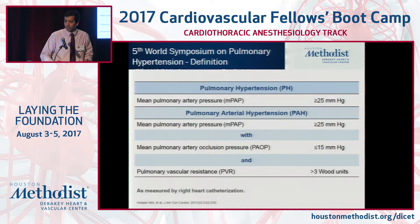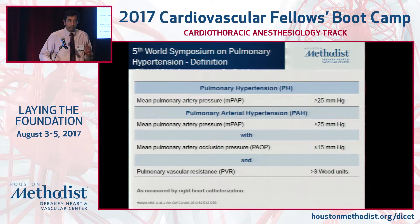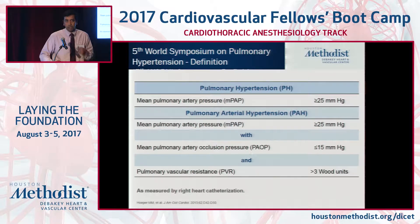I'll quickly run through the definition of pulmonary hypertension. It's defined as mean pulmonary artery pressure over 25. Pulmonary arterial hypertension used to be defined as precapillary pulmonary hypertension, which is mean pulmonary artery pressure over 25 with a wedge pressure under 15 and a PVR over three wood units. This diagnosis has to be made by a right heart catheterization — you cannot make the diagnosis of pulmonary arterial hypertension just based on echocardiogram.